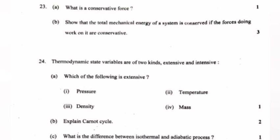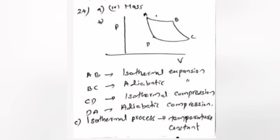Answer: Mass is extensive. (c) What is the difference between isothermal and adiabatic process?